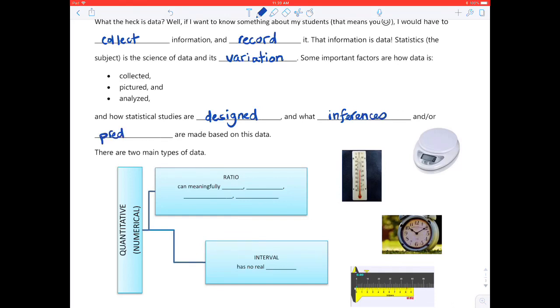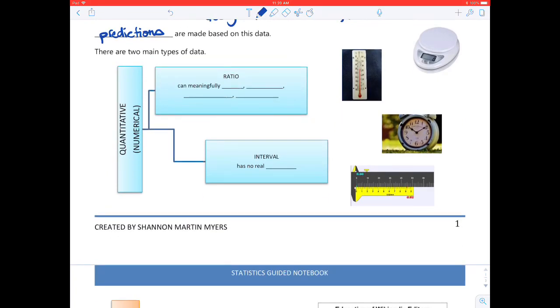So when you look at real life, the majority of people break down data as quantitative and qualitative. Within quantitative, there is ratio data and interval data. Ratio data can meaningfully add, subtract, multiply, and divide, as long as you're not dividing by zero. Whereas interval has no real zero.